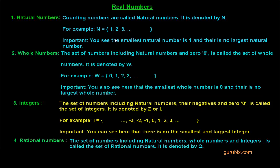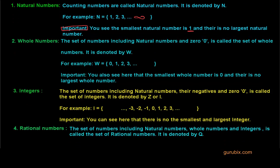Let me start first with natural numbers. As you know, counting numbers are called natural numbers and it is denoted by capital N. For example, N is the set of numbers which start from 1 and goes to infinity. It is very important to know that the smallest natural number is 1 and there is no largest natural number.